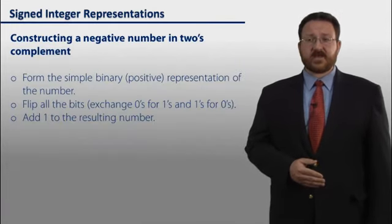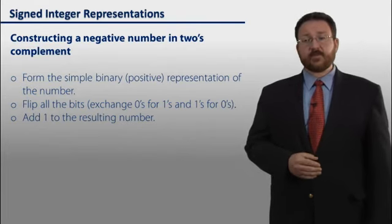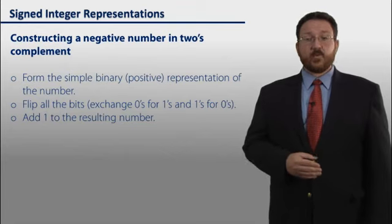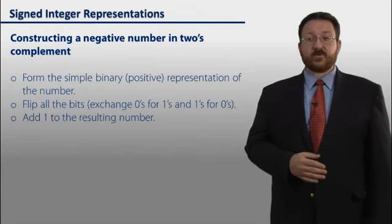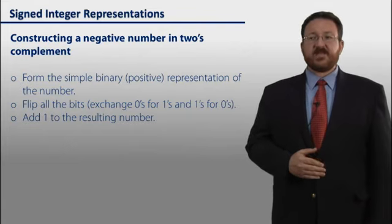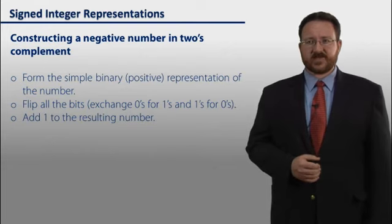So how do we go about constructing a number in 2's complement? The first step is to form the simple binary equivalent of that number. Then we XOR every single bit. We flip all the bits. We exchange 0's for 1's and 1's for 0's. Then we add 1 to the resulting number, and that forms the 2's complement representation.